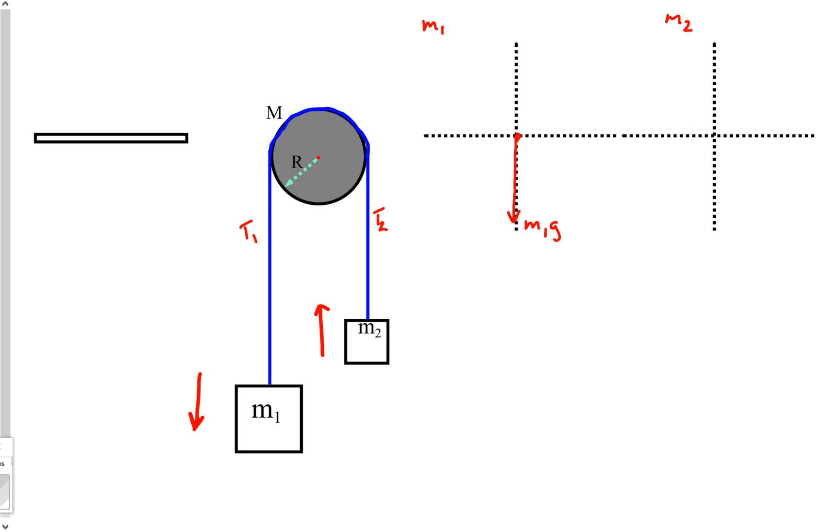But in this one we're actually going to call this tension one and this other rope tension two because they're not the same in this problem. So we're going to have a tension one T1 on this object. Now let's go to the other side and do it.